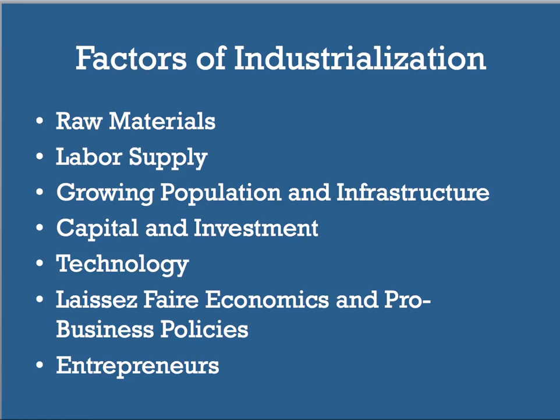By the end of this time period, America is going to become the biggest industrial power in the world in terms of manufacturing capacity, investment capital, and overall economic strength. A couple of factors really matter. The first is access to raw materials — the U.S. has a lot of land, and with it a lot of natural resources necessary for the industrial process: things like oil, iron, coal, lead, and timber.